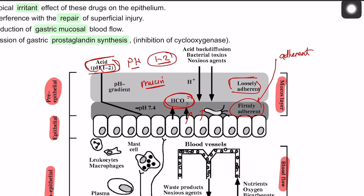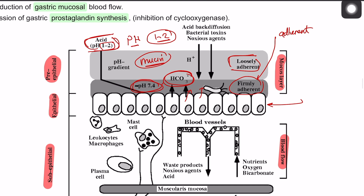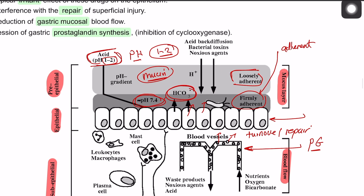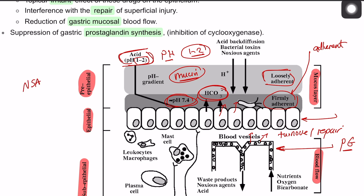You have a pH gradient from 1 to 2 inside the stomach cavity up to 7.4 within the mucin layer. The epithelial cells have a rich blood supply filled with nutrients, keeping them in a state of high turnover and high repair — if one is injured, it can be repaired very easily. Prostaglandin is the key compound that causes vasodilation and increases the delivery of these nutrients.